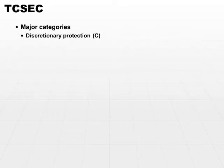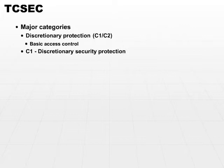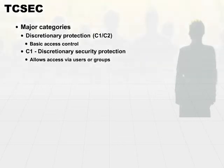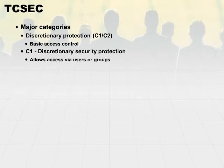Category C has two subcategories built into it: Category C1 and C2. Those are both discretionary protection. A C1 system is a discretionary security protection system which provides basic access control and allows access via users or groups. You can use different security or authentication protocols that are based on either users, groups, or a combination of the two.